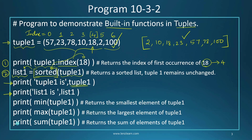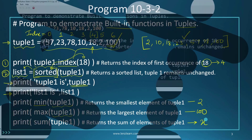After that, I have three more print statements. The function min() will identify the lowest value inside tuple1, which is 2. The function max() will return the highest value, which is 100. The last print statement uses sum() to add all elements inside tuple1 and print the total.